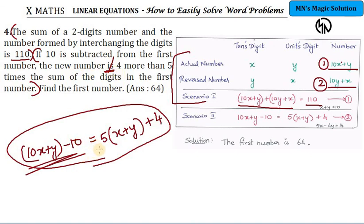Breaking it down: first number minus 10 equals the new number. The new number is 4 more than 5 times sum of digits. So we add 4 to 5 times (X plus Y). I usually insist on writing plus 4 or minus 4 at the end, as it becomes easier to work with the equation. When you solve these equations, the answer you get is 64. So 64 is the two-digit number relevant to this problem.